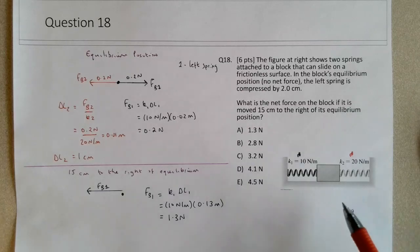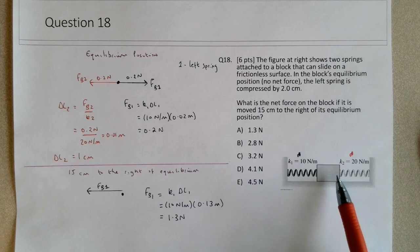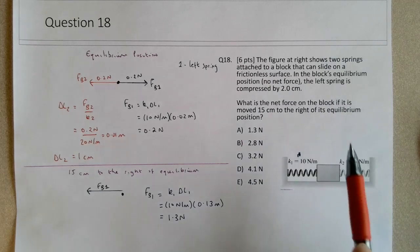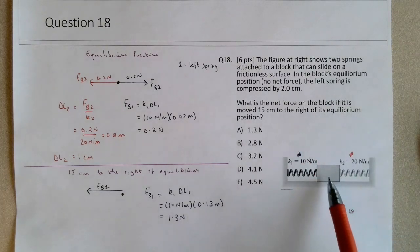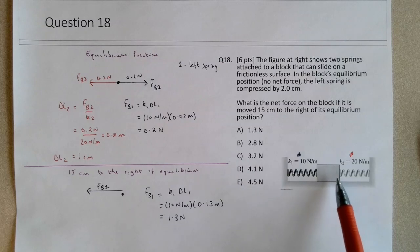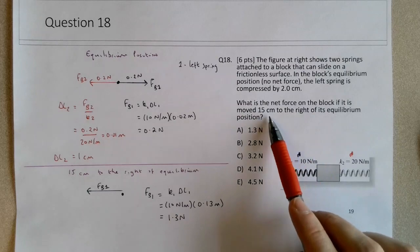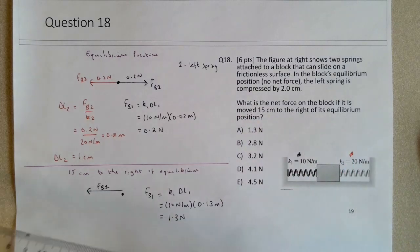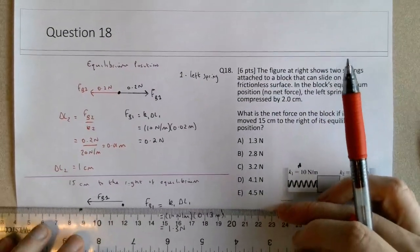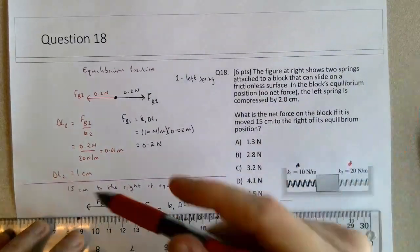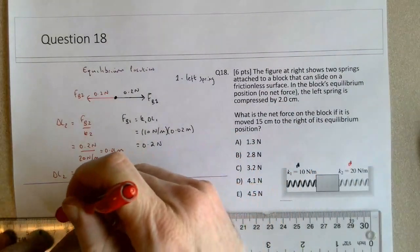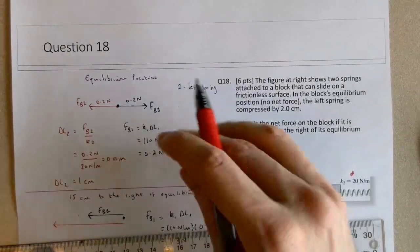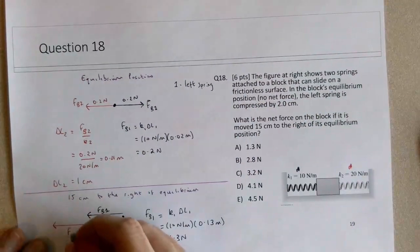And then to figure out spring 1, sorry, spring 2 was initially compressed 1 centimeter in the equilibrium position. So then if we push it to the right, we're compressing it even further. So 1 centimeter from compression plus another 15 centimeters compression gives it a total compression of 16 centimeters. So spring 2 will also exert a leftward force, quite large, much larger than spring 1.